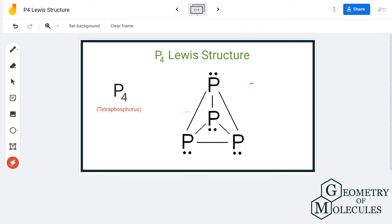Which means we are using up 12 of these valence electrons. We are left with eight valence electrons, and two of these can be placed on each atom to complete the octet of phosphorus atom.